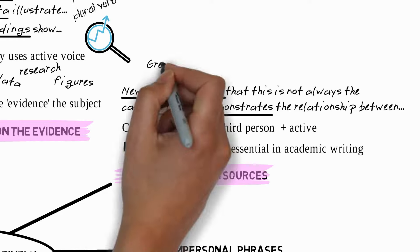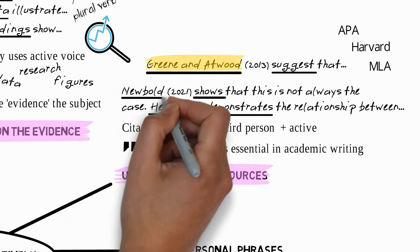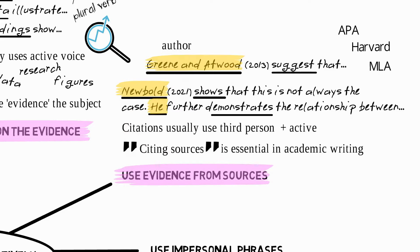Another example: Green and Atwood 2013 suggest that. So these are author-date citations as used by APA and Harvard. Although a similar method works for other referencing systems such as MLA. So the authors being cited are the subject of the sentence, and the verb is in the active voice.